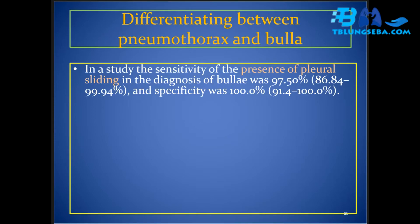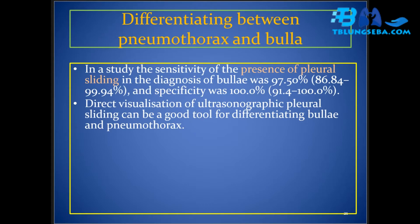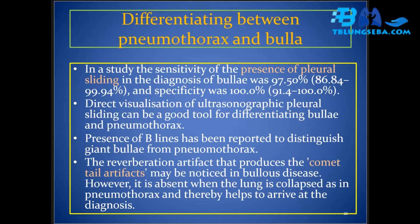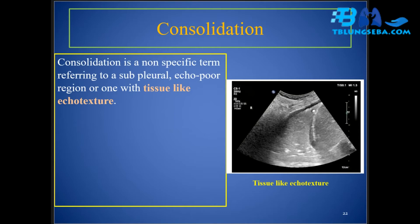In differentiating pneumothorax from bulla, one study found the sensitivity of pleural sliding in diagnosing bullae was 97.50 percent (86.84 to 99.94 percent) and specificity was 100.0 percent (91.4 to 100.0 percent). Direct visualization of ultrasonographic pleural sliding is a good tool for this differentiation. Presence of B-lines has been reported to distinguish giant bullae from pneumothorax. The reverberation artifact producing comet tail artifacts may be noticed in bullous disease but is absent when the lung is collapsed as in pneumothorax.